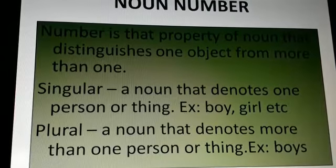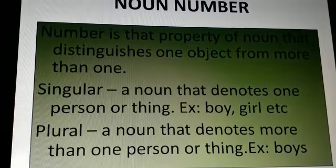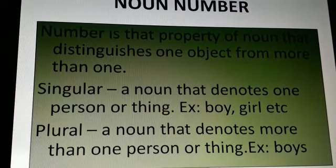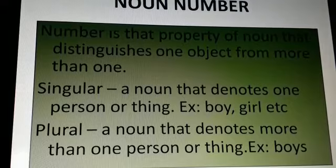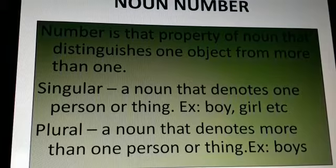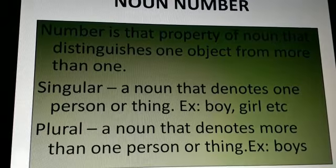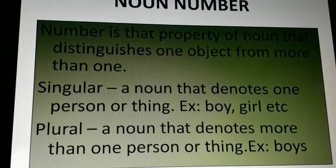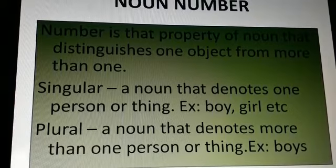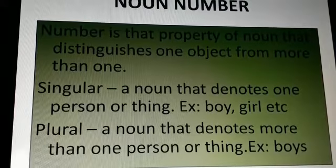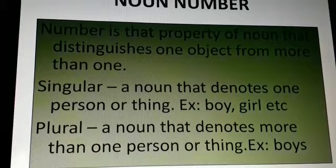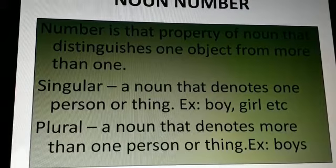Number is that property of noun that distinguishes one object from more than one. So it is that feature of noun which makes a difference between one, a single one to too many. So there are two noun numbers that is singular and plural. So what is singular? A noun that denotes one person or thing. Example, boy, girl, etc. So this means that where a noun only is talking about a single person or a thing, it is called singular noun.